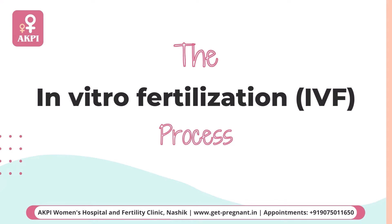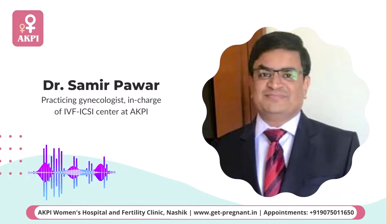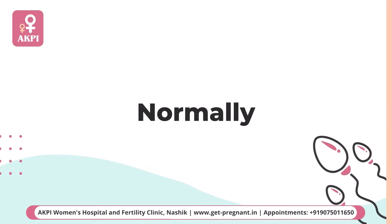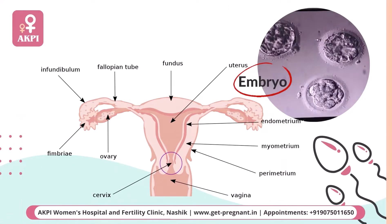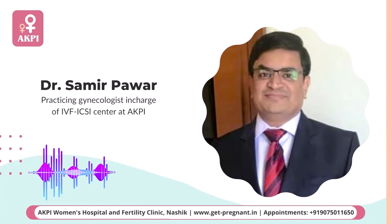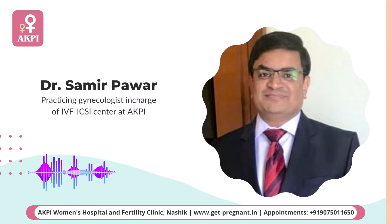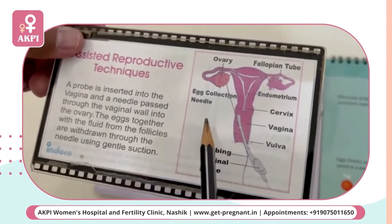Hi friends. In vitro fertilization is basically the fertilization of an egg with a sperm outside the woman's body. Normally, fertilization occurs in the fallopian tubes and the fertilized egg or embryo comes and implants in the womb. Due to some reason, when the egg and the sperm cannot fertilize within the woman's womb, it has to be fertilized outside the body.